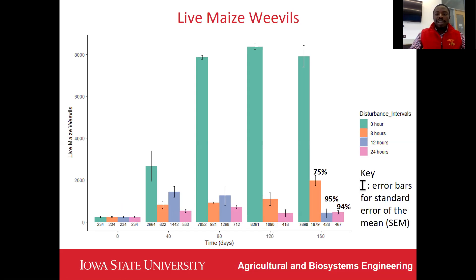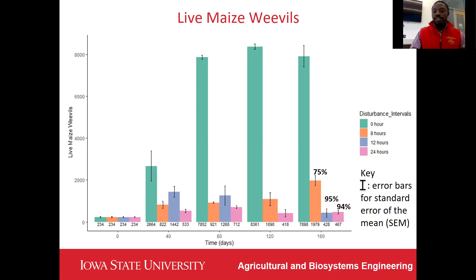Though we did not achieve 100% mortality of maize weaver suppression, live weavers were reduced by 75% for the 8-hour interval, 95% for the 12-hour interval, and 94% for the 24-hour interval, compared to undisturbed jars at the end of the storage period. Our results showed the potential of disturbance to control the multiplication of maize weavers in stored maize.